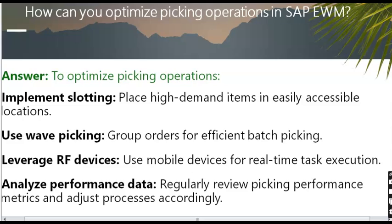How can you optimize picking operations in SAP EWM? To optimize picking operations: implement slotting by placing high-demand items in easily accessible locations, use wave picking to group orders for efficient batch picking, leverage RF devices for real-time task execution, and regularly review picking performance metrics and adjust processes accordingly.